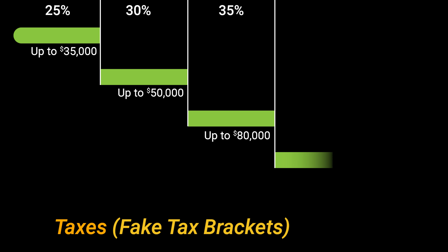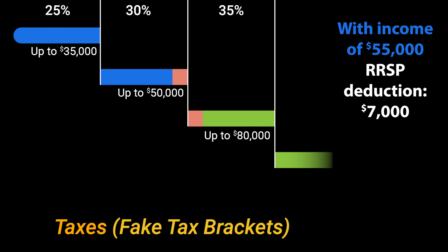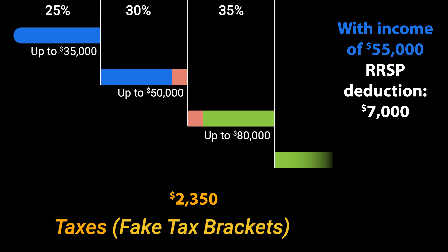In this example — these are not actual brackets — let's say brackets go from $0–$35,000 at 25%, $35,000–$50,000 at 30%, and $50,000–$80,000 at 35%. Someone with income of $55,000 makes an RRSP contribution of $7,000. The first $5,000 of that deduction falls in the 35% bracket, saving him $1,750. The next $2,000 falls in the 30% bracket, saving him $600.